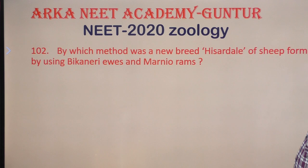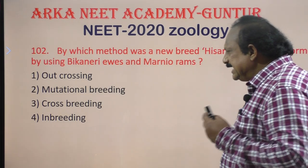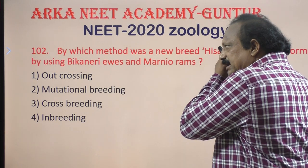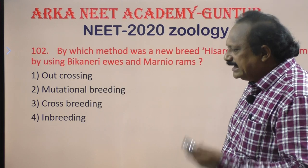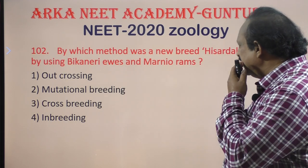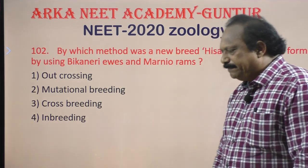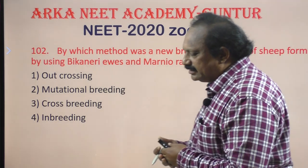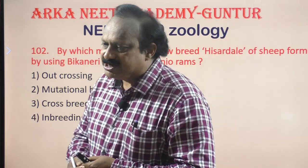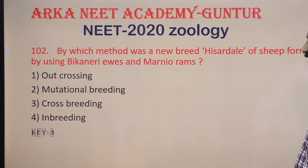A new breed called Hissardale of sheep was formed using the Bikaneri ewe and Merino ram. The Bikaneri ewe is the female parent and the Merino ram is the male parent. The answer is crossbreeding, where crossing takes place between unrelated breeds. Hissardale is an example of a crossbreed.